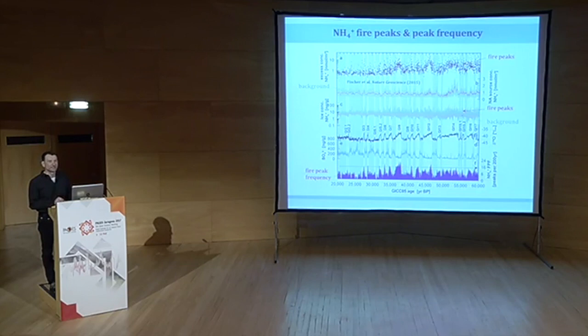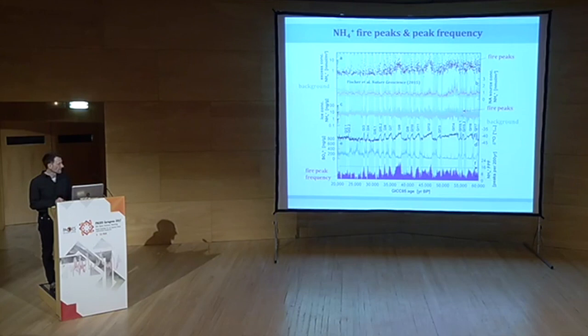Looking at the background concentration — which reflects nitrogen turnover — you don't see stadial-interstadial variability. So fire activity is increased during warm interstadials, which may be related to higher fire ignition risk due to more lightning activity, but also more fuel available at that time.